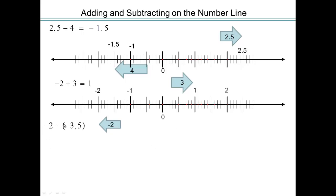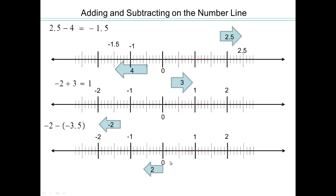All right, negative 2 minus minus 3 and 1 half. So negative 2 would be right there. OK, subtracting negative 3 and 1 half. So going in the opposite direction of negative 3 and 1 half. Negative 3 and 1 half is going that way. Opposite direction would be going that way. 3 and 1 half. So your answer would be 1 and 1 half.